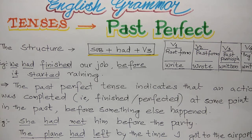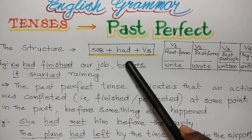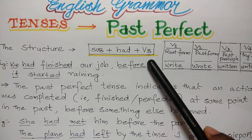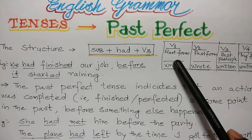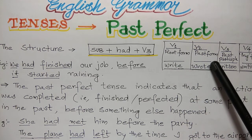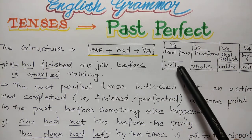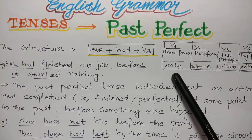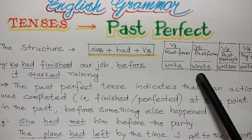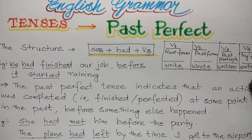The past perfect tense. The structure of past perfect tense is: subject plus 'had' plus V3. V3 form is the past participle form of the verb. V1 is the root form of the verb, V2 the past form, V3 the past participle form, and V4 the -ing form. Take the example of the verb 'write': V1 is 'write', V2 is 'wrote', V3 the past participle form is 'written', and the -ing form is 'writing'.